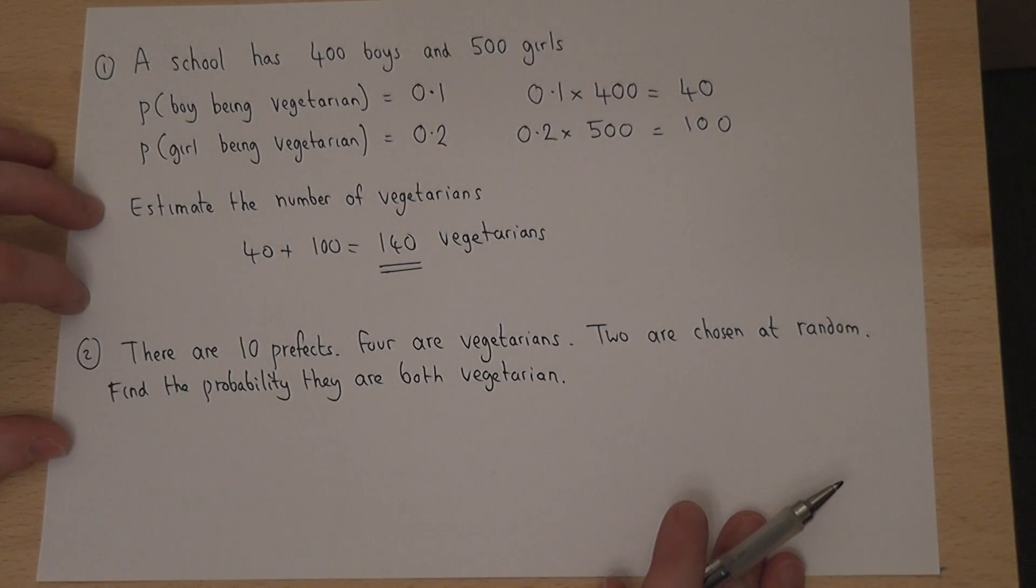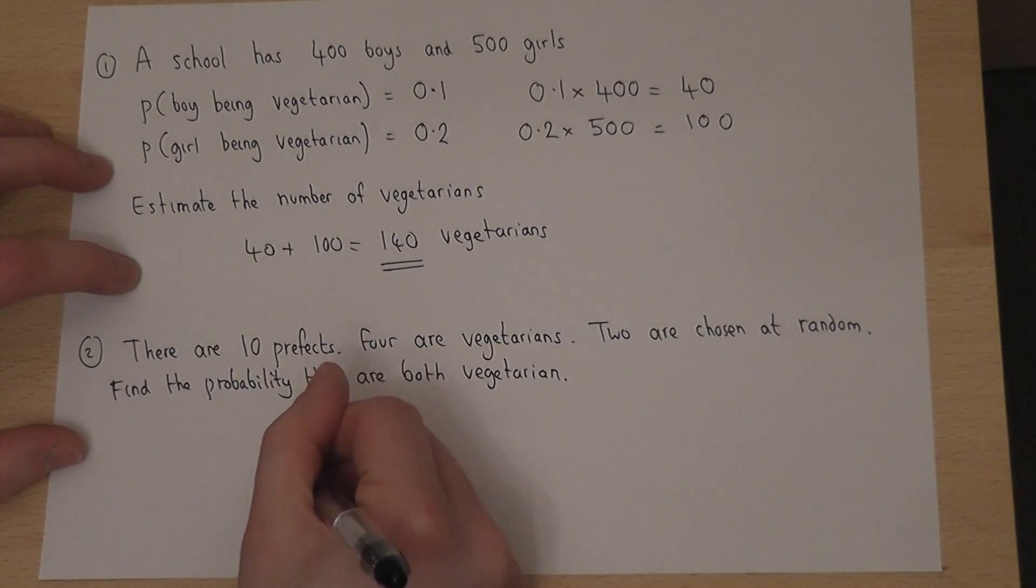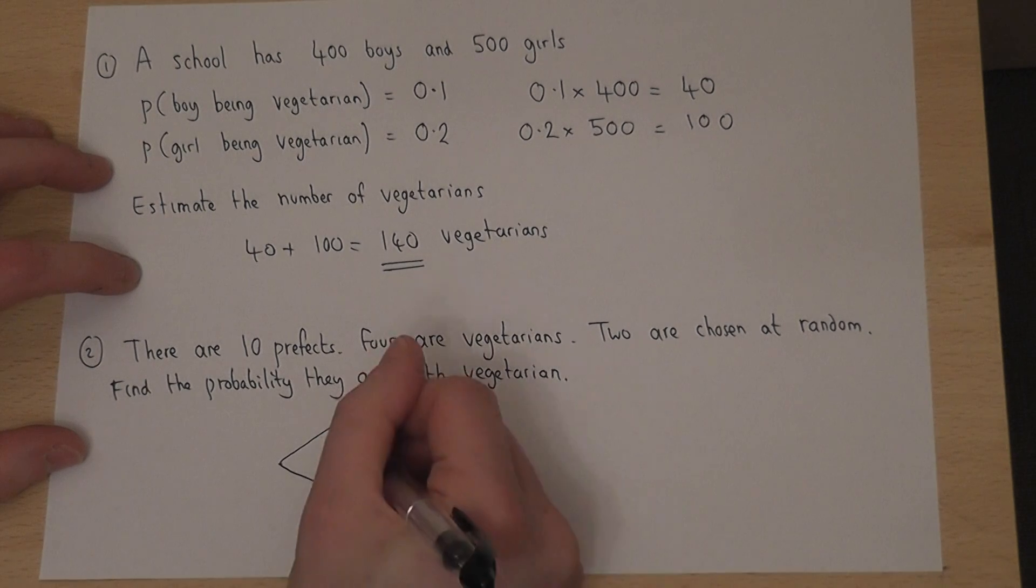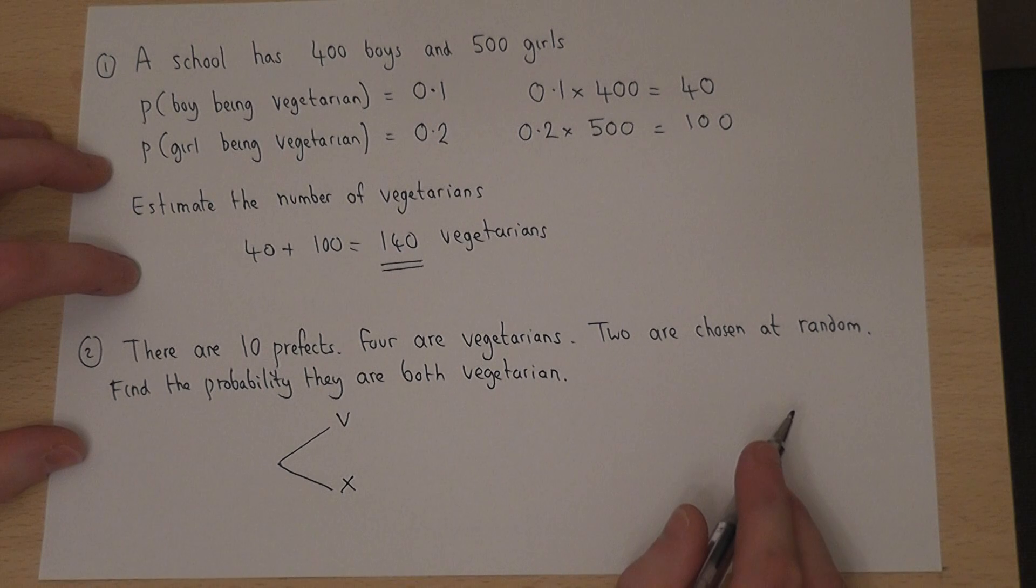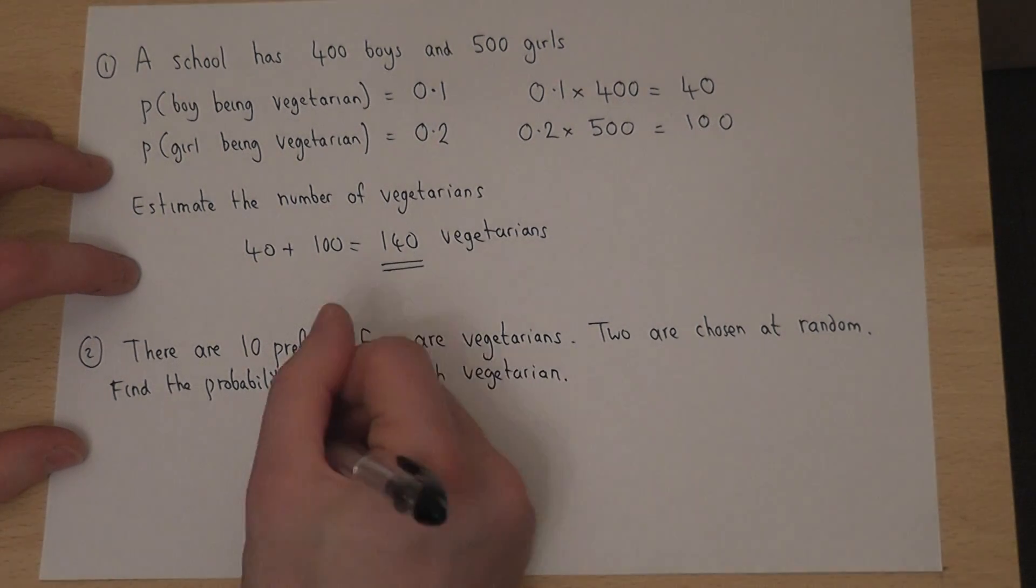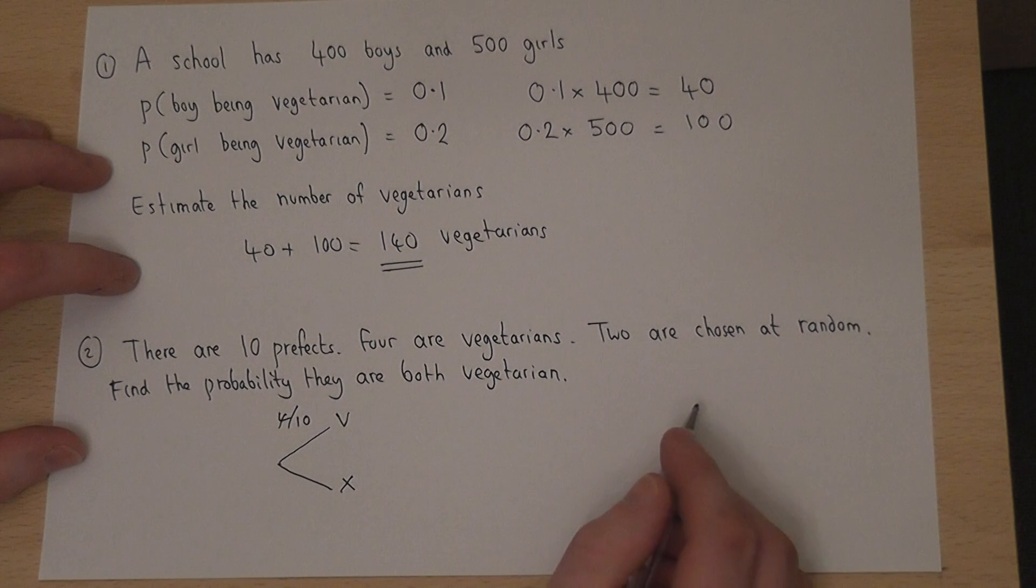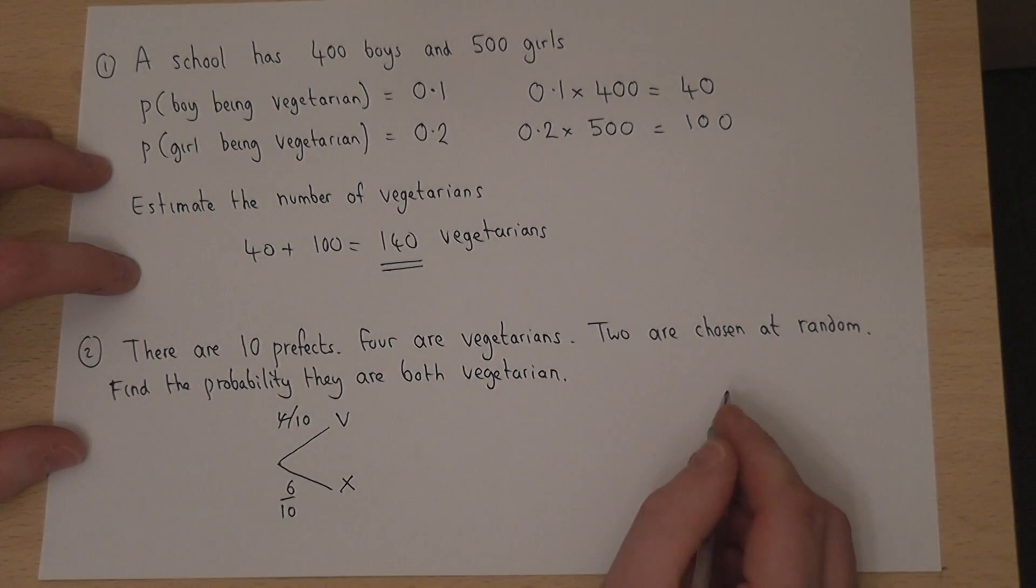Now to answer this, you might choose to do a quick tree diagram. So when we first pick our first prefect out, it could be vegetarian or not vegetarian. Now the chance for the first will be 4 out of 10 to be vegetarian. The chance they're not will be 6 out of 10. That's for the first prefect.